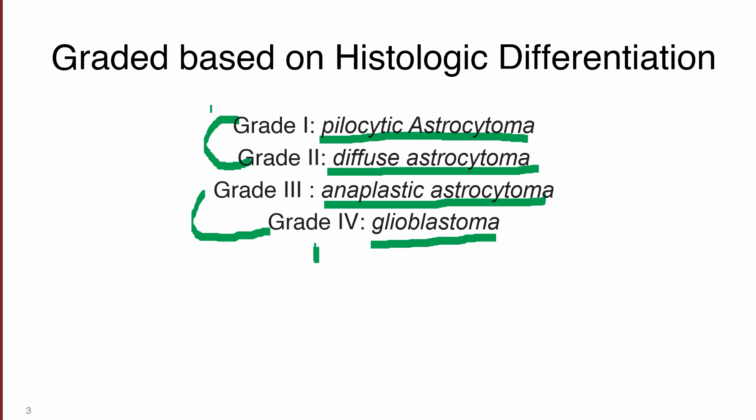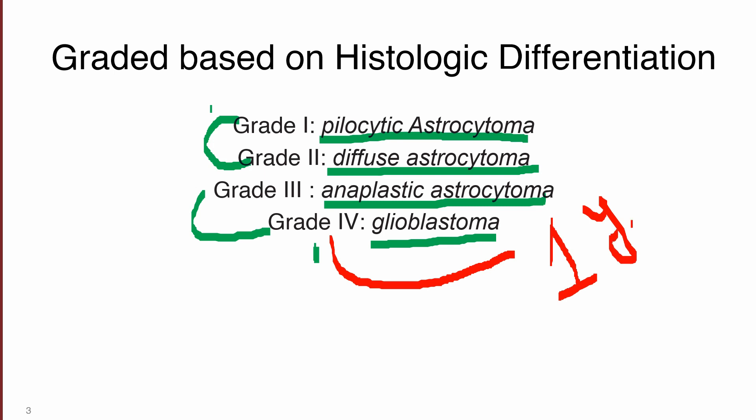Grade 4 glioblastoma has a mean survival of less than one year, sometimes limiting to six months — a highly aggressive tumor. Glioblastoma is the most common primary brain tumor in adults, while pilocytic astrocytoma is the most common primary brain tumor in children. We'll start with pilocytic astrocytoma and then discuss glioblastoma with their gross and microscopic appearances.